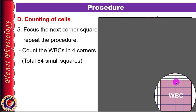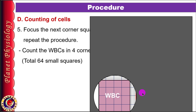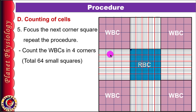Apply this method to count WBCs in all 16 small squares of the first WBC square, then move to the next corner WBC square and repeat the process. Count cells in all 4 corner WBC squares, which means 64 small WBC squares in total.